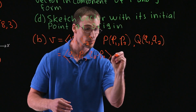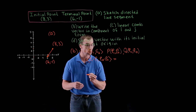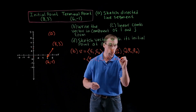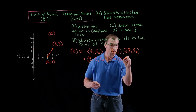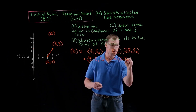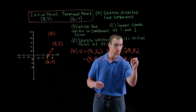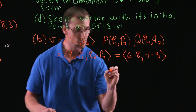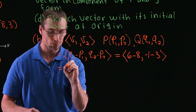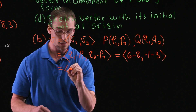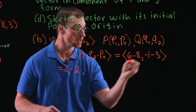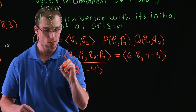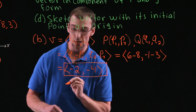We just plug in the coordinates from our initial and terminal points. So q1 is 6 minus p1 which is 8, and q2 is -1 minus p2 which is 3. Doing our subtraction: 6 minus 8 is -2, and -1 minus 3 gives us -4. So our vector in component form is (-2, -4).